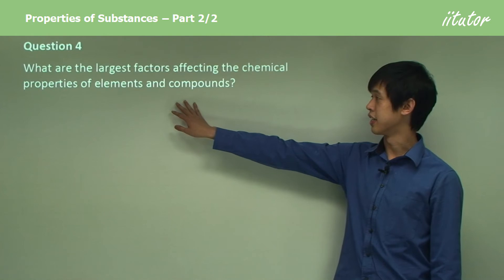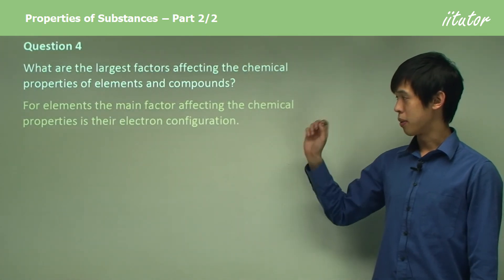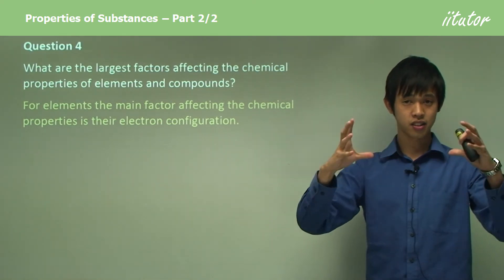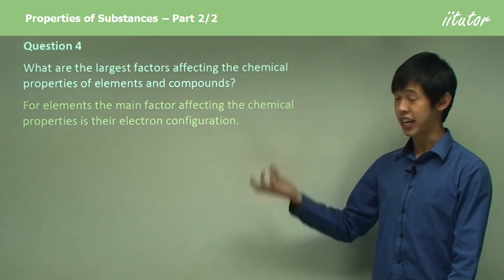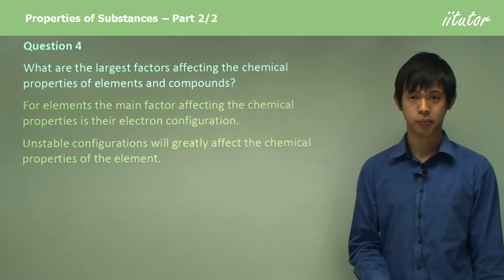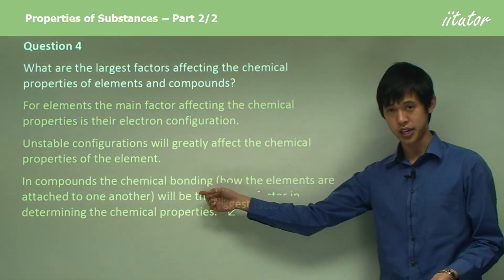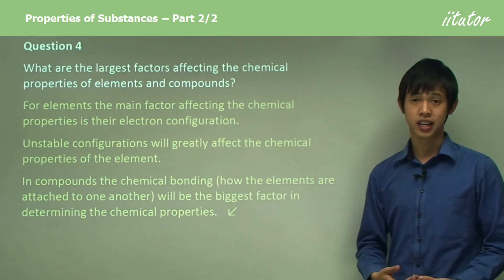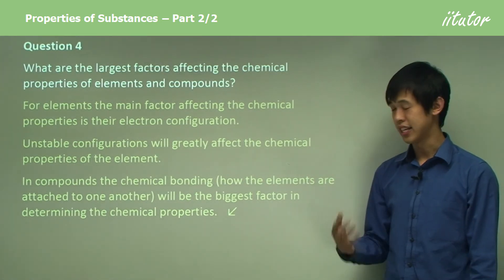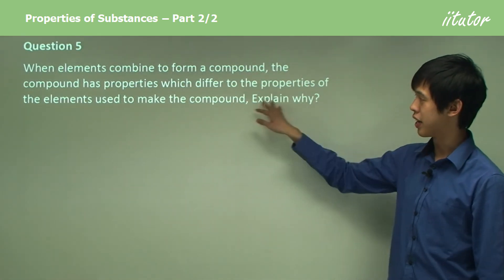What are the largest factors affecting the chemical properties of elements and compounds? For elements, the main factor is electron configuration — how the electrons are arranged around the nucleus essentially explains their chemical properties, and unstable configurations will affect those properties. For compounds, the biggest factor is chemical bonding — the way the elements bond together and are arranged will determine the compound's chemical properties.